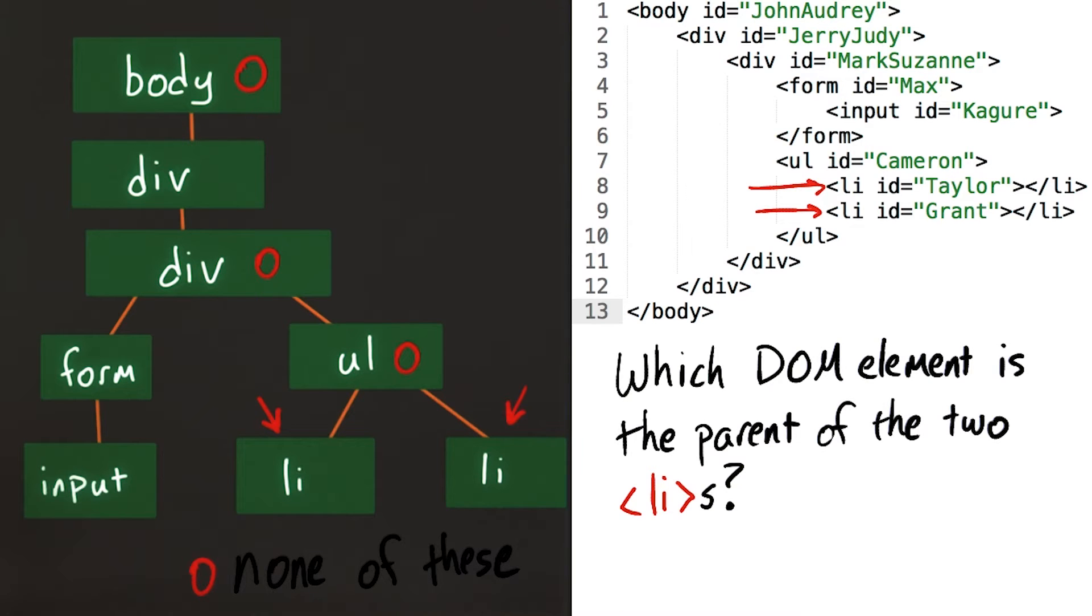For this quiz, I want you to examine this DOM tree. Which of the following DOM elements is the immediate parent of the two list elements? You can see them in the HTML here, and in the DOM tree over here. Is it the body, this div, this ul, or is it none of these?